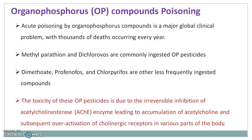The toxicity of these organophosphorus pesticides is due to the irreversible inhibition of acetylcholinesterase enzyme. This enzyme is responsible for the hydrolysis of acetylcholine. Inhibition of this enzyme leads to accumulation of acetylcholine and subsequent over-activation of cholinergic receptors in various parts of the body.